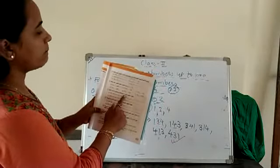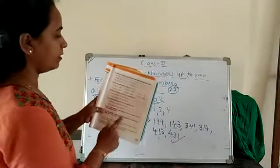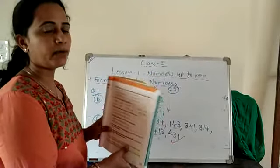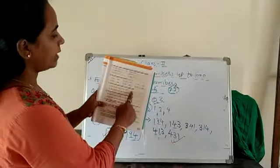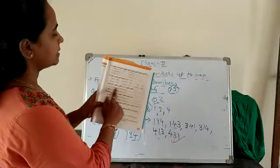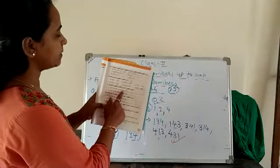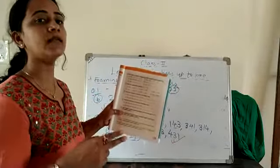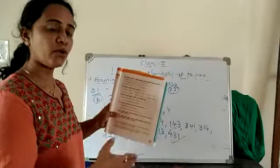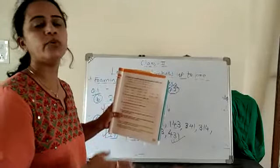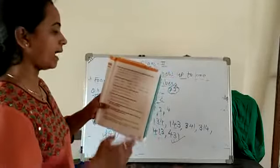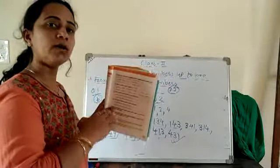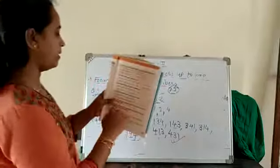Then write the following numbers in ascending order. Now you can understand ascending order properly. Try it and complete it. First, see the 100s place. If the 100s place is the same, then see the 10s place. If the 10s place is also the same, then see the 1s place. Compare and write. Ascending order means smallest to biggest number.